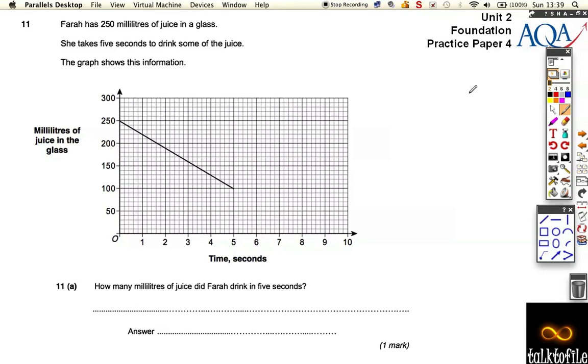Okay, question number 11 now. It says that Farah has 250ml of juice in a glass. She takes five seconds to drink some juice. So this is where the time goes from 0 to 5.